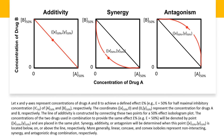Using the same formula, one can plot an isobologram where the x and y axes represent concentrations of drug A and drug B to achieve a defined effect. If the defined effect is 50%, then the coordinate at A0 will represent the IC50 for drug A, and the coordinate at 0B will be the IC50 for drug B. The line of additivity can then be constructed by connecting these two points for a 50% effect isobologram plot. The concentrations of the two drugs used in combination to provide the same effect will be denoted by point x and y and are placed in the same plot. Synergy, additivity, or antagonism will be determined when this point is located below, on, or above the line, respectively.